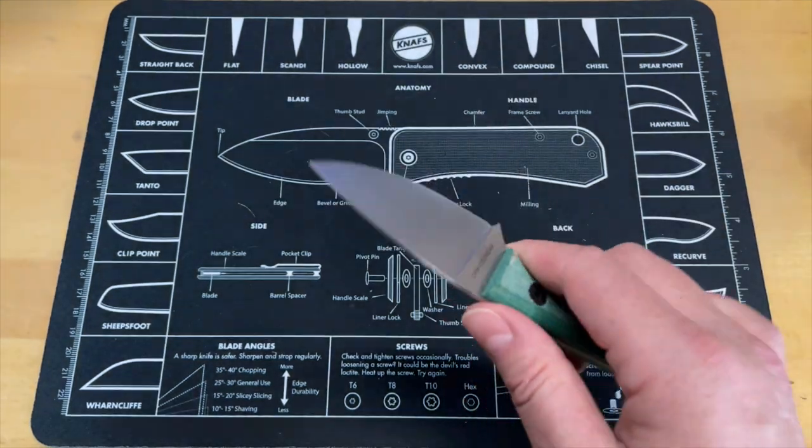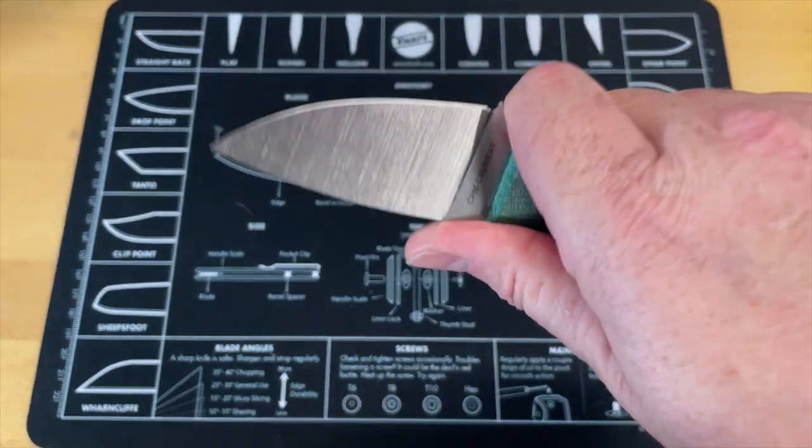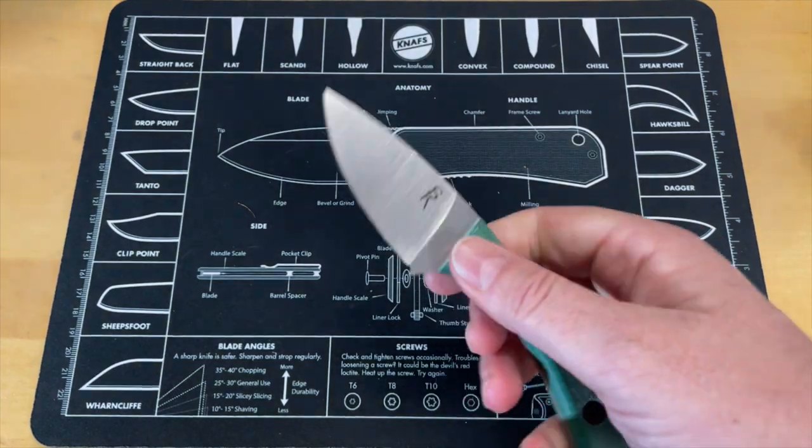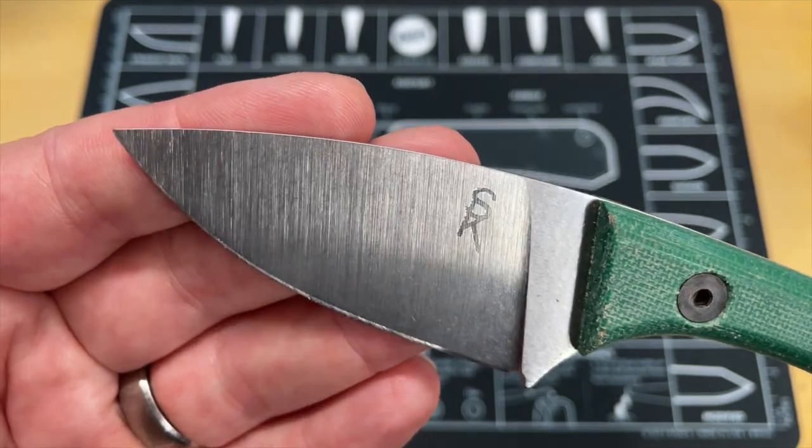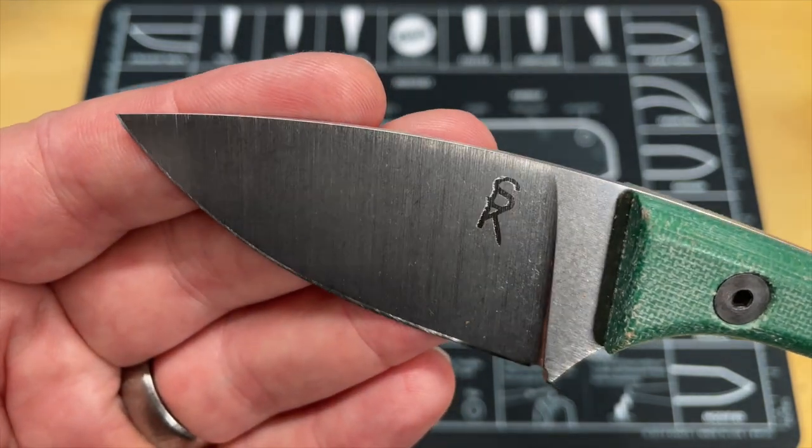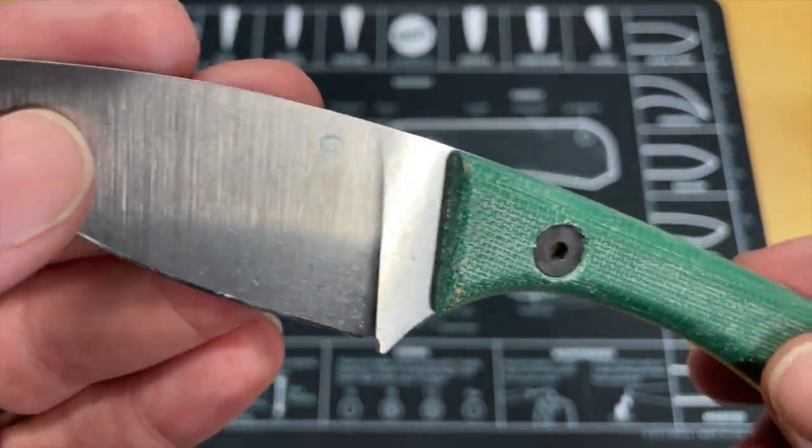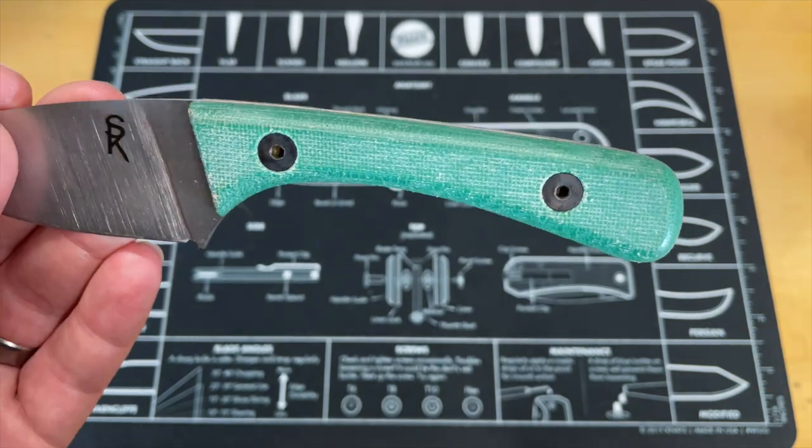And to have CPM Cruwear, which I've used before and I know it gets dull and needs sharpened from time to time, hold up to as much cutting as I did on this is pretty impressive. Also like I said, I love the grind work. I love that it's a raw grind with a little bit of a stone wash on it. But this is the cool part: these are the handles. This is Terotuff.